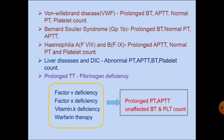In hemophilia A, there is deficiency of factor 8, and in hemophilia B, there is deficiency of factor 9. Both of these factors come under the intrinsic pathway. So there is prolonged APTT with normal PT and platelet count.